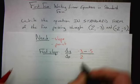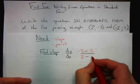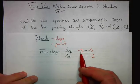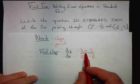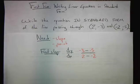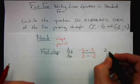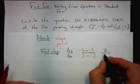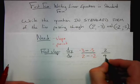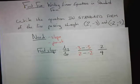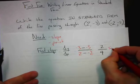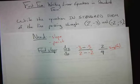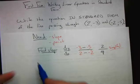We have to be careful with our signs. On the top, negative 3 minus negative 5 turns into negative 3 plus 5, which is positive 2. At the bottom, 2 minus negative 2 is positive 4. So we have our slope as 2 over 4. But remember, with slope we must always simplify — so the slope we're going to use is positive 1/2.